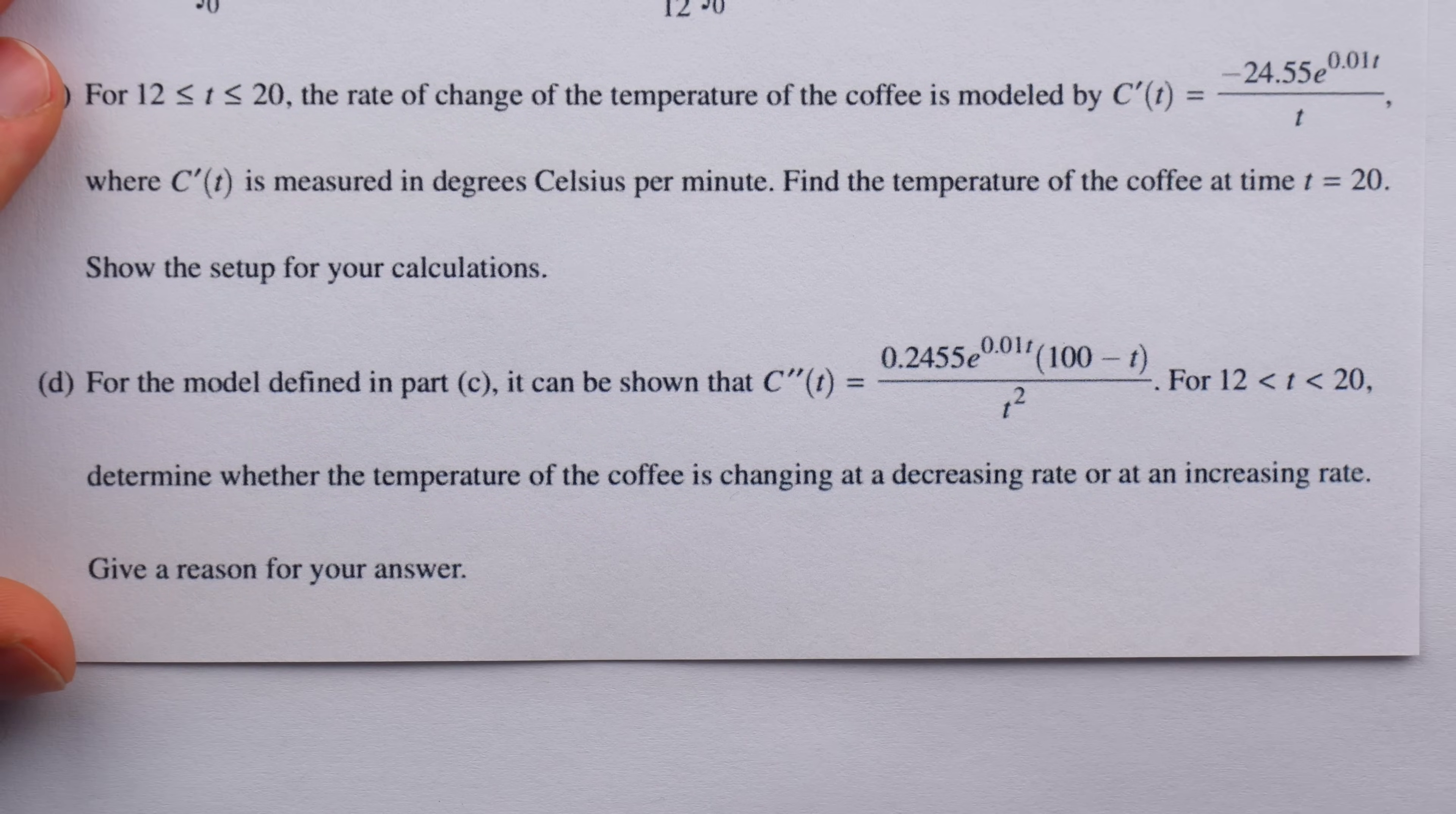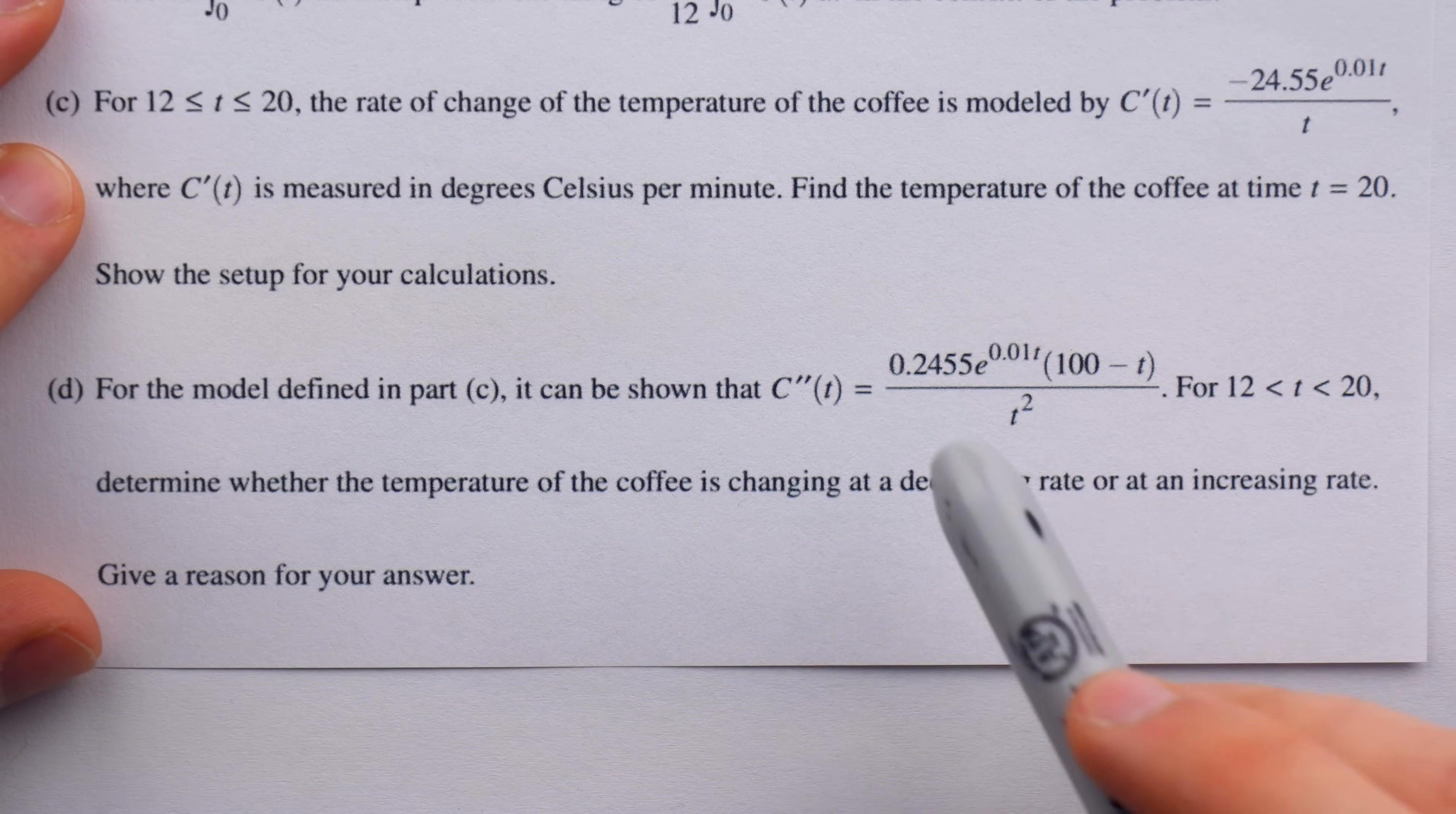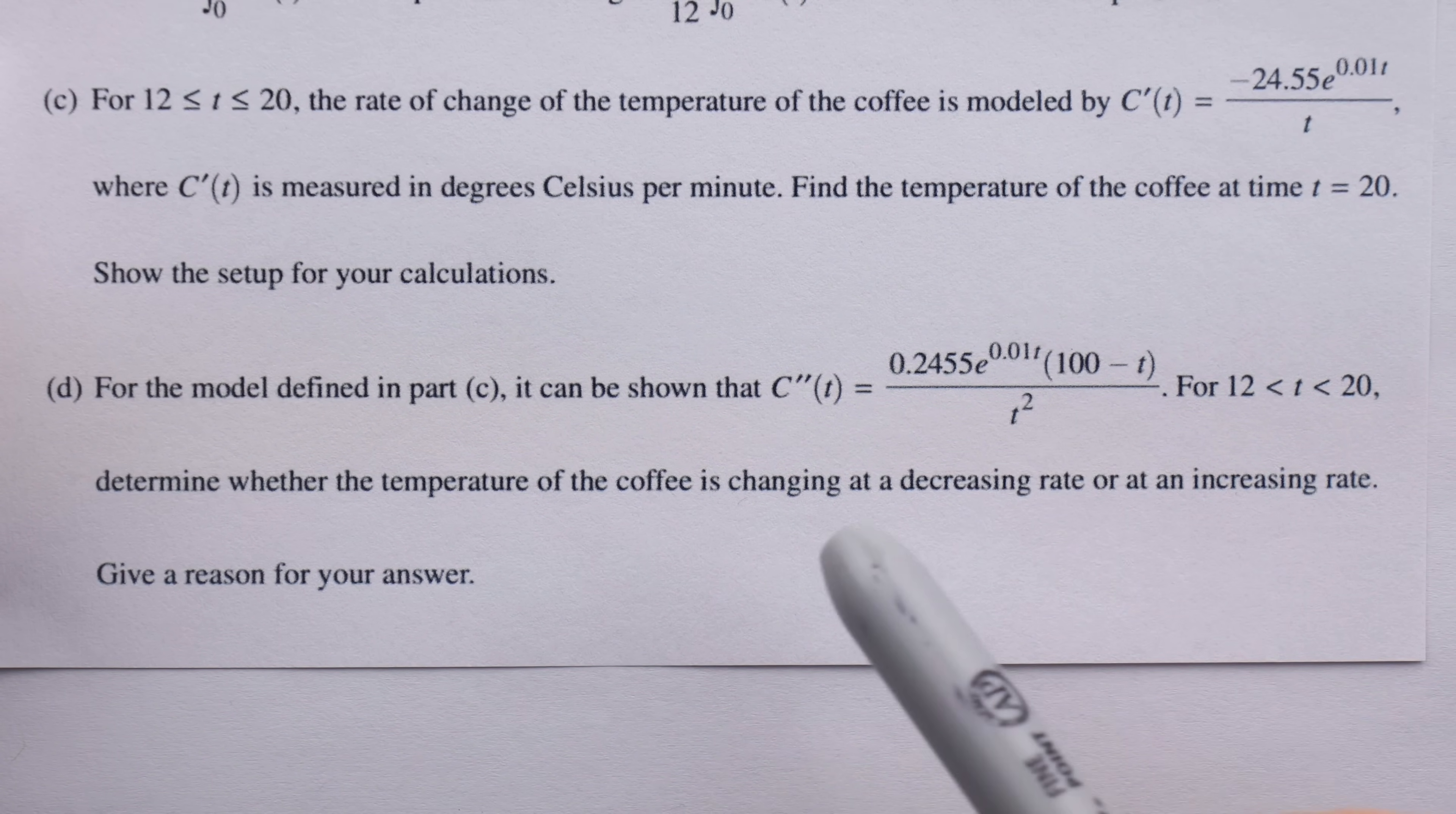The temperature of the coffee changing is described by the derivative, but we're asked about the rate of that change, and the rate of change of the derivative is exactly what the second derivative is, and of course that's why it's provided for us. Now, hopefully any calculus student would be able to find this second derivative on their own, but sometimes just in the interest of your time, the writers of the questions will provide it for you.